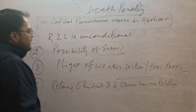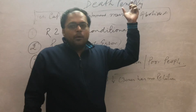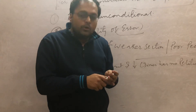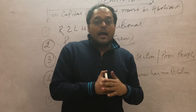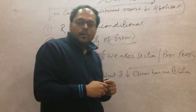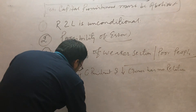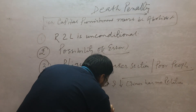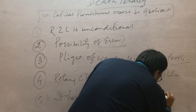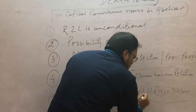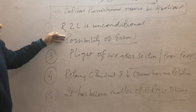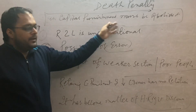Fifth, the idea of death penalty has entered the domain of human rights. It is no longer solely under the domain of the state whether to take the life of people, because it has become a human rights discourse — you cannot take the life of people. These are the arguments for abolishing capital punishment.